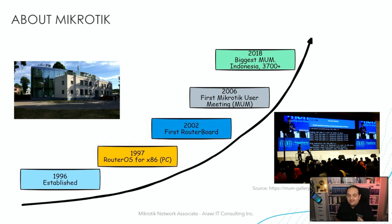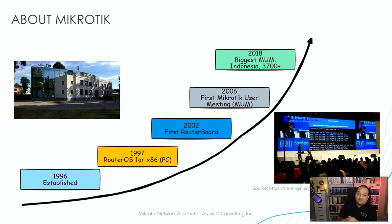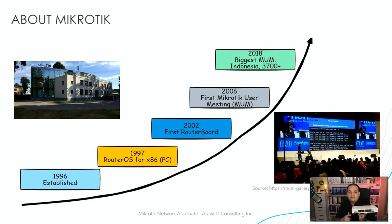And actually that's something we can still do — we can take an old computer or any x86 PC and install RouterOS as the main operating system. But obviously that was a solution that probably was not scalable. Some years later, in 2002, the first router board came to the market. A router board is a product where we have the hardware and also the operating system running in the device — an integrated solution.